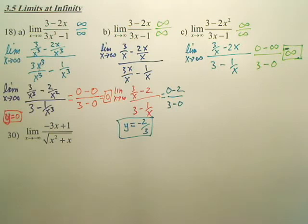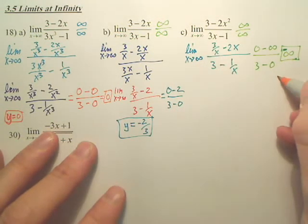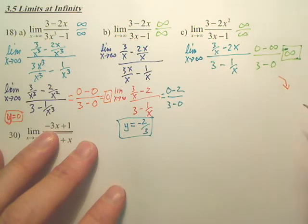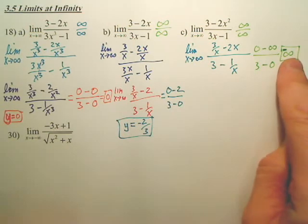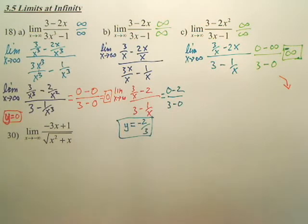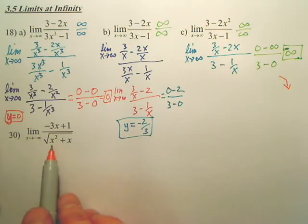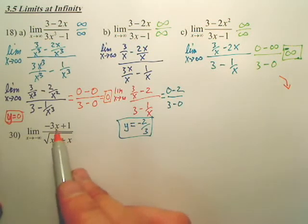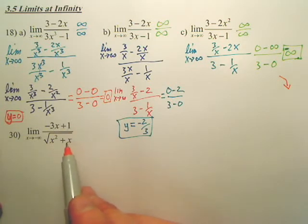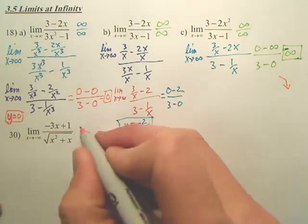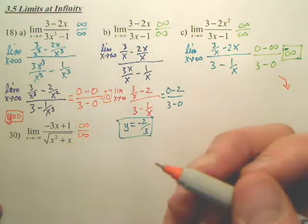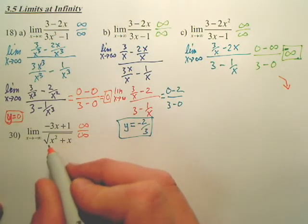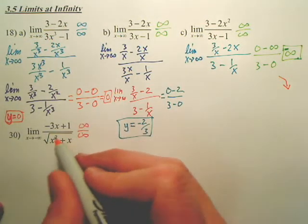What that means is as x approaches infinity of this graph, it's going to be going down forever. So this one is negative infinity. For number 30, what you have to realize is this ends up being infinity over the square root of infinity, which is still infinity over infinity. So we can divide by the highest power in the denominator. The denominator is not x squared — the denominator is square root of x squared.